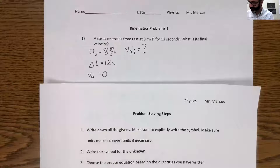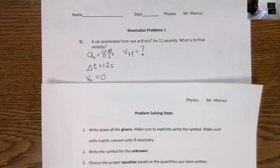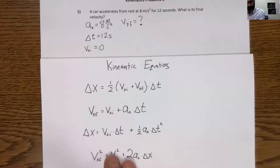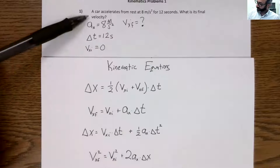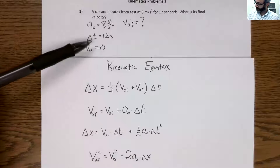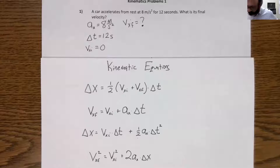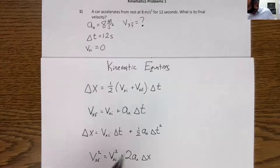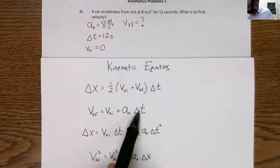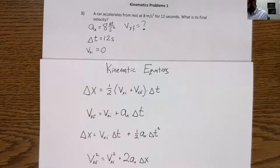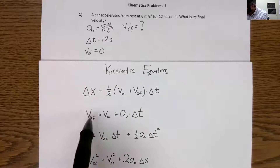Now step three — this is where it's a little trickier, because now we have four equations to pick from. We want to choose the right equation. To find the right equation, we need to find the equation that has exactly these four symbols in it: ax, delta T, Vxi, and Vxf. Only one of those four equations is going to work. The second one — because it's the only one that has ax, delta T, Vxi, and Vxf. All the others have a delta X in them, and we don't know delta X, so we can't plug it in.